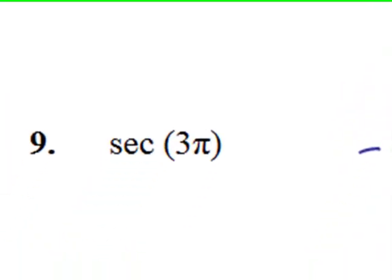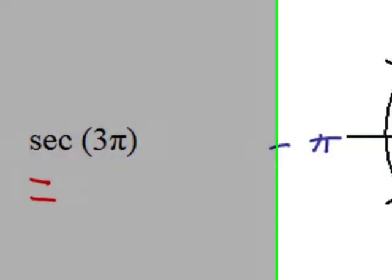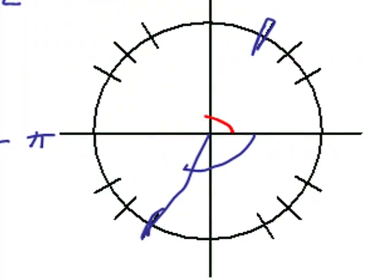Number nine. Secant of three pi. Three pi is, come around here, one pi, two pi. We wrap all the way around to three pi.